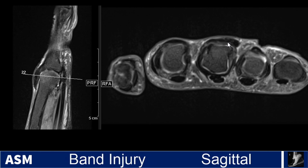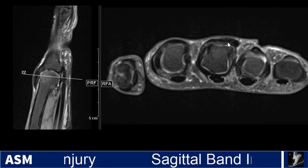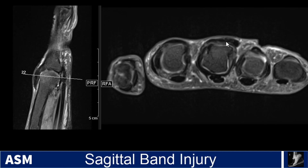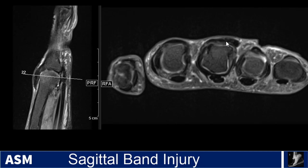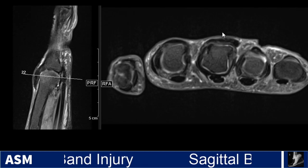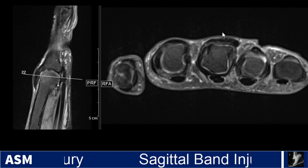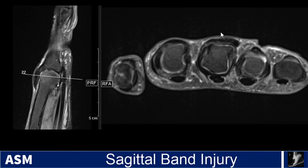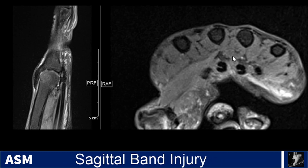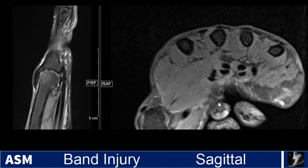One way we can really accentuate the instability is by having the patient flex their digits. Sometimes this is apparent on dynamic ultrasound or even clinical exam, and if you're able to do it for MRI, it is also usually going to be apparent. Here we see an axial proton density fat suppressed image with the patient in flexion.